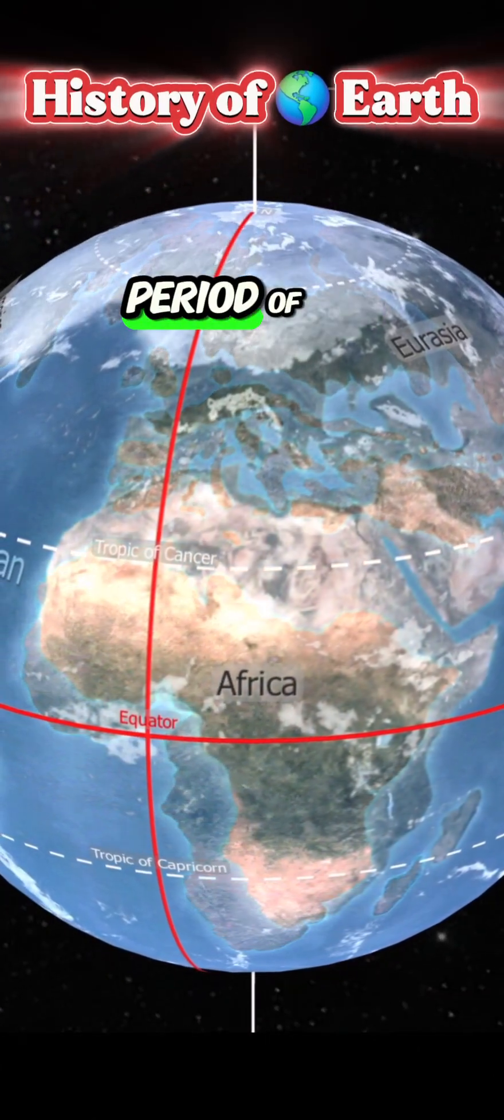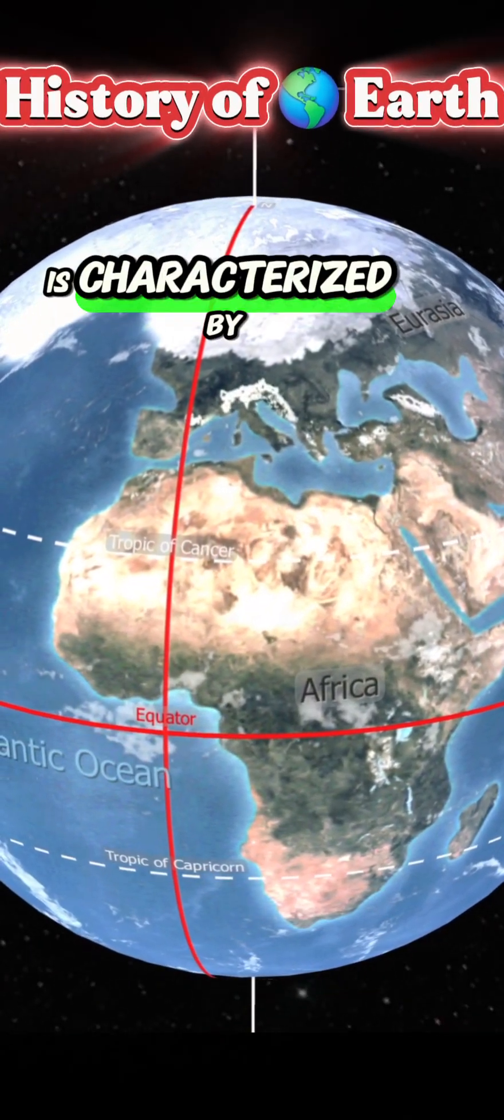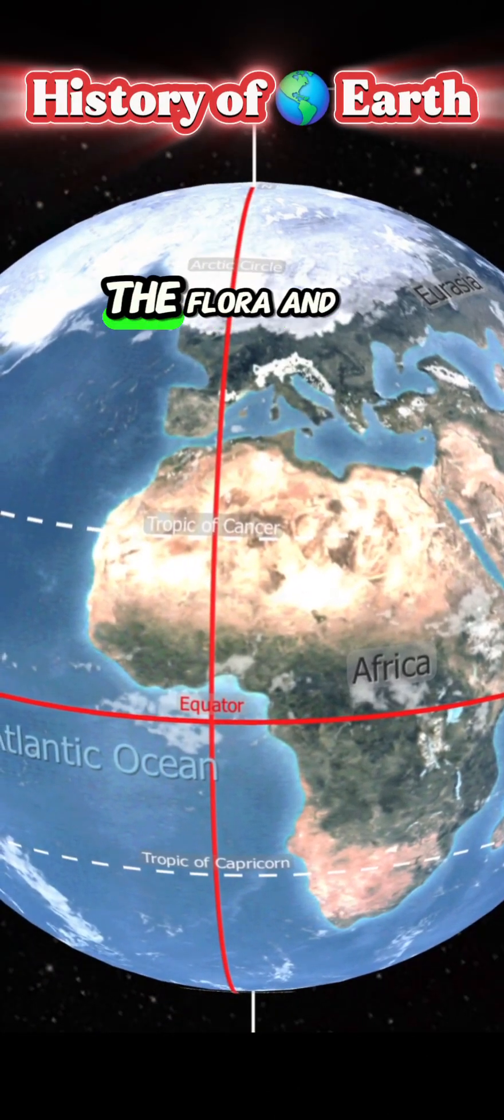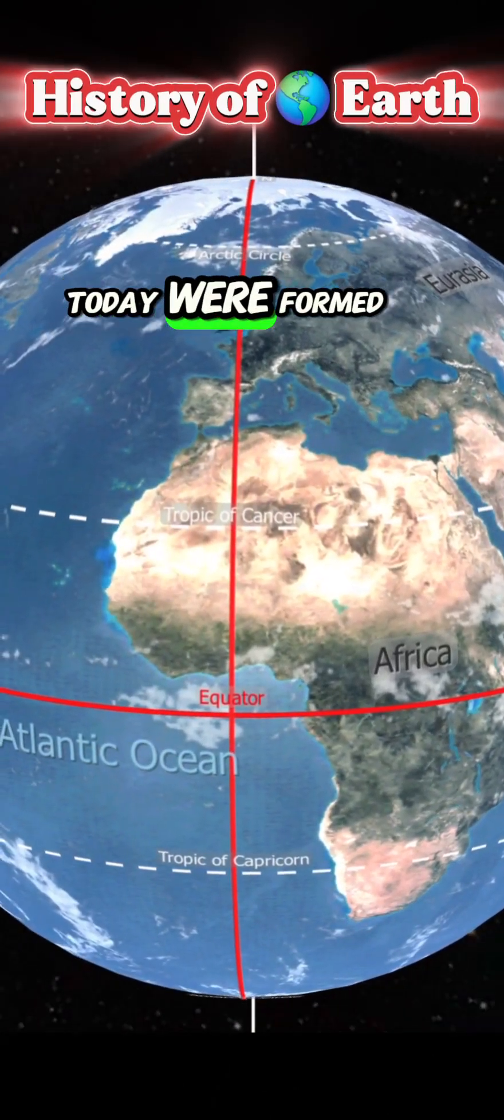The quaternary period of the Cenozoic era is characterized by ice ages. At the end of the last ice age, the flora and fauna we know today were formed.